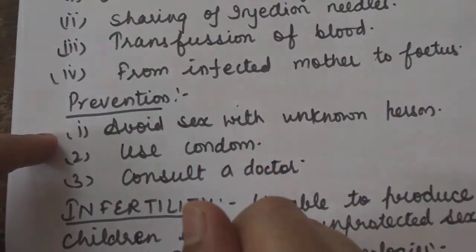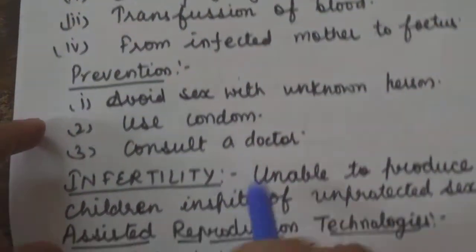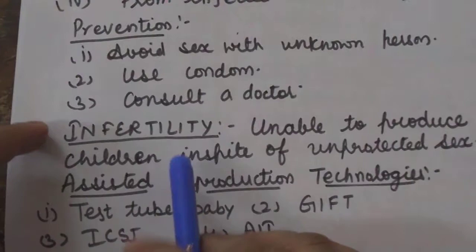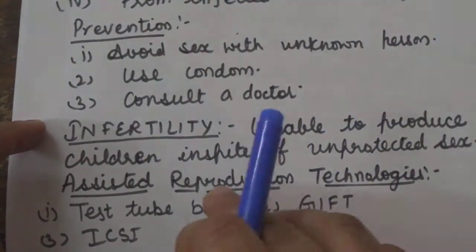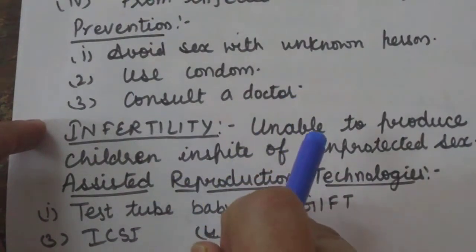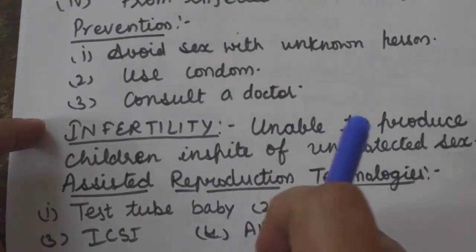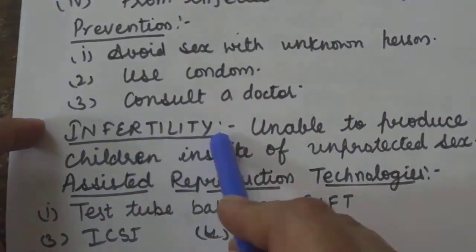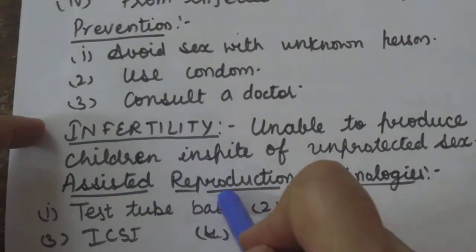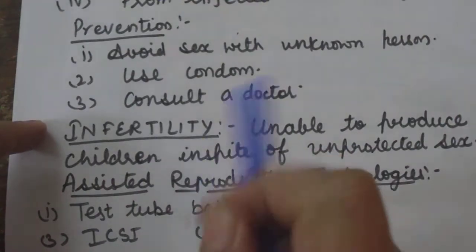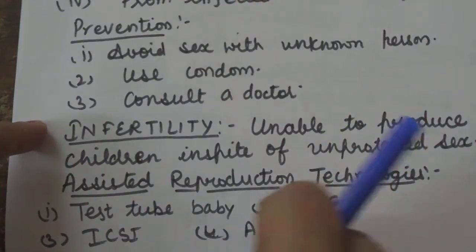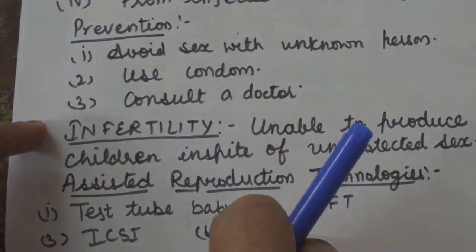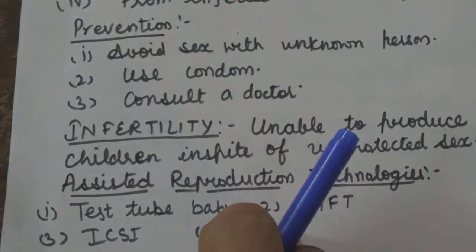Next topic is infertility. All over the world, including India, a large number of couples are infertile — that is, they are unable to produce children in spite of unprotected sex. Such a phenomenon is termed infertility. There are many reasons; infertility may be in males or females and can be categorized as physical, congenital, disease-related, drug-related, immunological, and physiological.